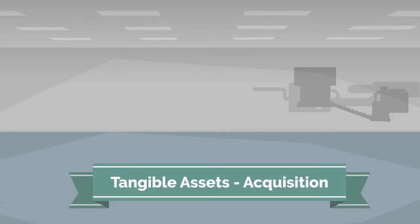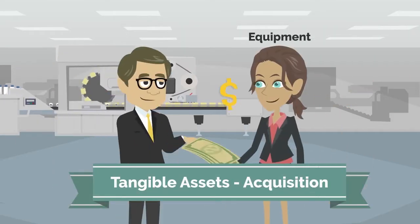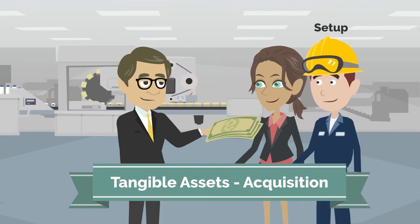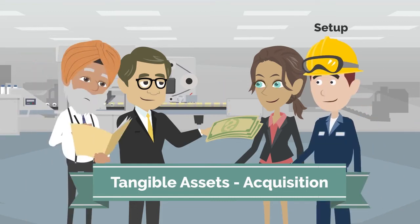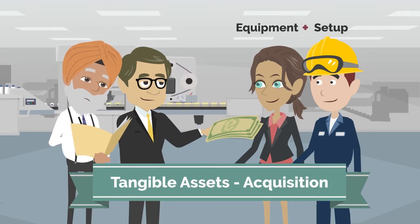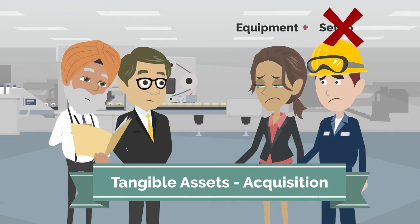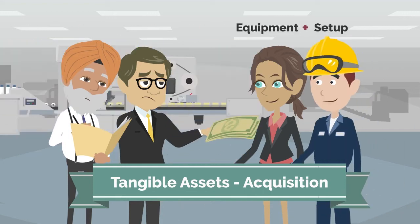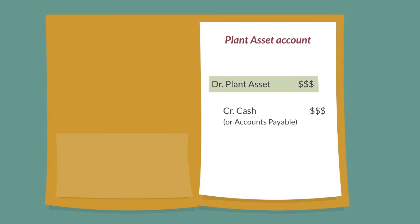On the other hand, when buying equipment, our company needs to pay for the equipment but also additional fees like setup costs to make it usable. We need to record the total amount spent to acquire the asset and add any amounts needed to make it ready for use. Buying equipment without setting it up would result in useless equipment, so the setup cost is inseparable from the equipment cost. We will debit the plant asset account and credit cash.